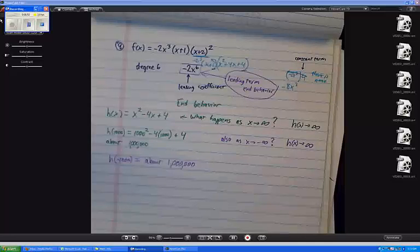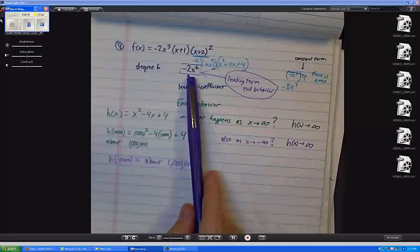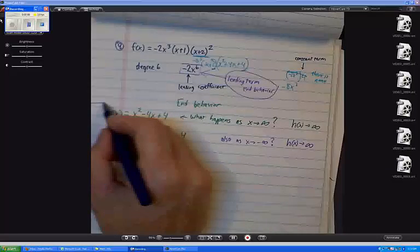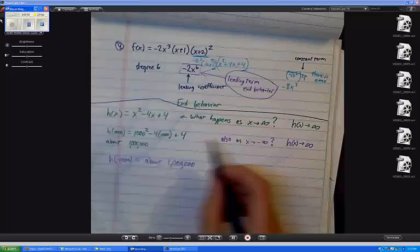Here, if the leading coefficient is negative 2x to the sixth, let's talk about the end behavior of f of x. Because that's really the problem I'm supposed to do. So, up here. End behavior.